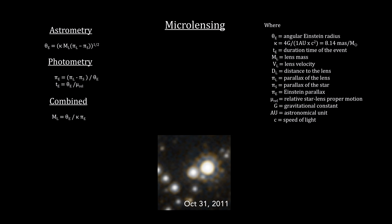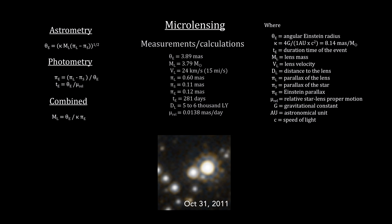The results showed that the star's image was offset from where it normally would be by just over a milli-arc second. This amount of deflection indicated that the lens is five to six thousand light-years away, is traveling at around 24 kilometers per second — that's 15 miles per second — with a mass of 3.7 suns.